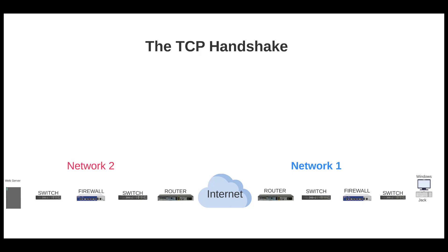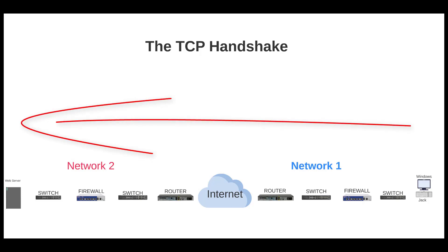And this is how it works. Remember our client-server model from the last video? All networking at a high level is a client trying to make a connection to a server. A client in network 1 wants to make a connection to retrieve a web page on network 2's web server. If not, just check the previous video.